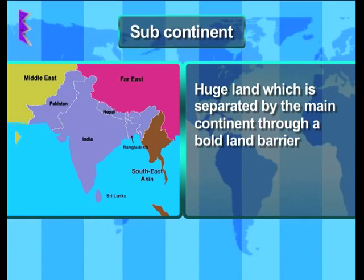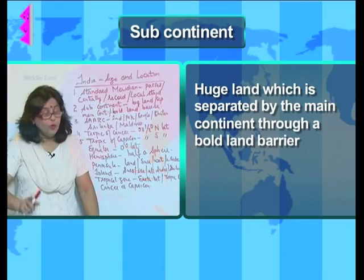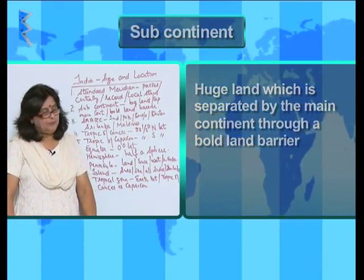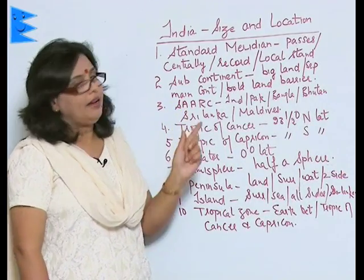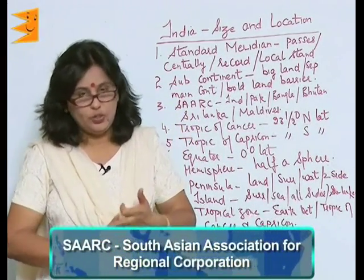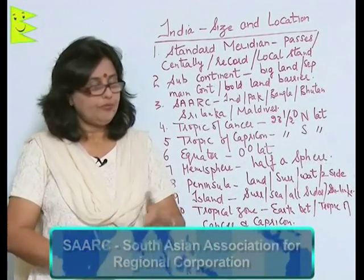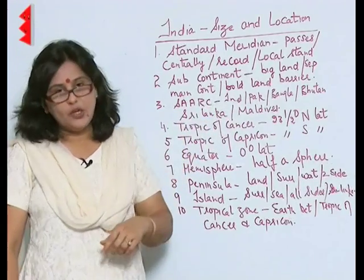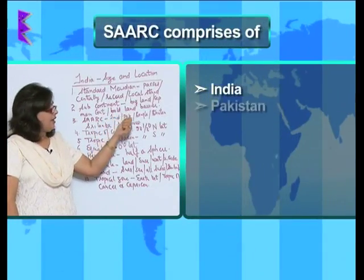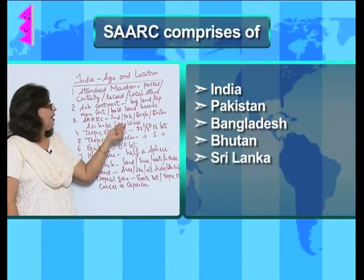Subcontinent is a huge, big piece of land which is separated from the main continent through a bold land barrier. Then we have SAARC — the South Asian Association for Regional Cooperation. It comprises seven countries: India, Pakistan, Bangladesh, Bhutan, Sri Lanka, and Maldives.